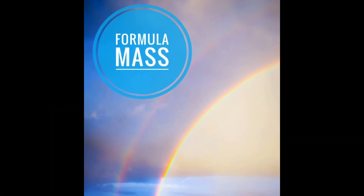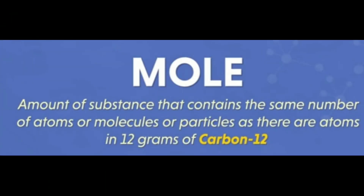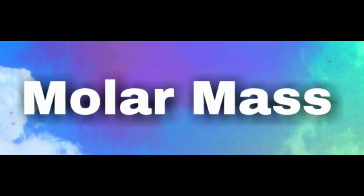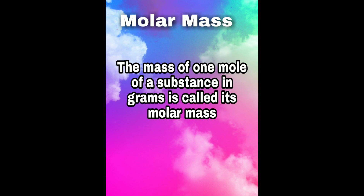Now, recollect the important points from this video. First, we studied about formula mass — it is the sum of the atomic masses of all the atoms present in one formula unit of a compound. Next, we studied about mole concept — one mole of a substance is the amount of substance that contains the same number of particles as there are atoms exactly in 12 grams of carbon-12 isotope. Next, we studied about molar mass — it is the mass of one mole of a substance expressed in grams.